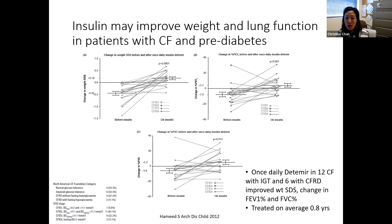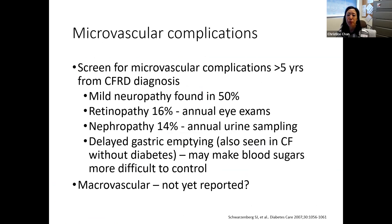A small study looked at using Detemir — a type of long-acting insulin — in a group of kids with impaired glucose tolerance, i.e., pre-diabetes, as well as CFRD, and it showed improvements in weight and lung function after being treated for just under a year. This is an area of active ongoing research, whether or not insulin might even help in pre-diabetes.